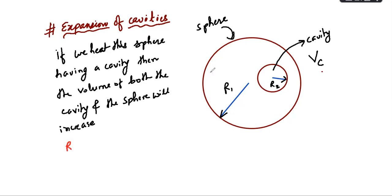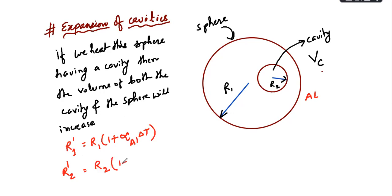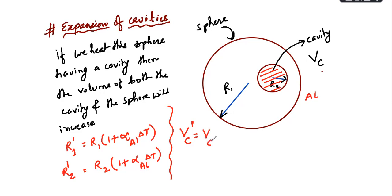Radius r1 will change: r1' = r1 × (1 + α·Δt). Let us say this is made of aluminium, so we use α for aluminium. Why are we using alpha? Because radius is a linear quantity, so we use the coefficient of linear expansion. The radius of the cavity will also increase. The volume of the cavity will be: Vc' = Vc × (1 + γ·Δt), where γ = 3α.